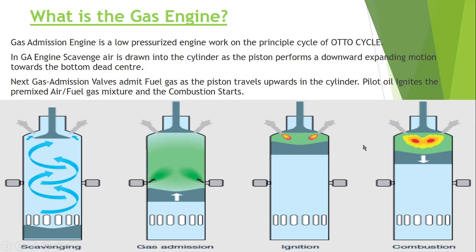Let's see how this works. There is a piston, a micro booster injection valve, an exhaust valve, and a safe gas admission valve. When the piston is at BDC, the scavenge port opens and air comes inside. When the piston moves up just covering the scavenge port, the safe gas admission valve injects the gas.